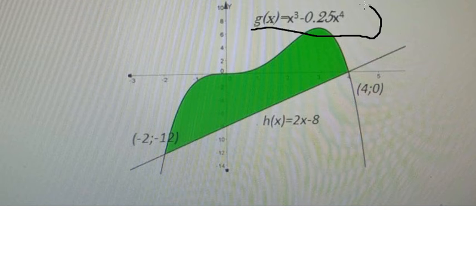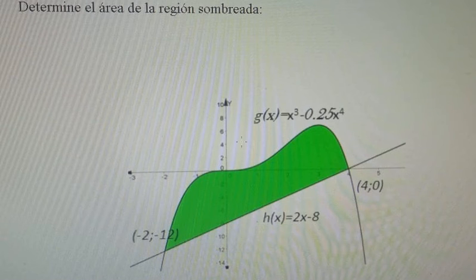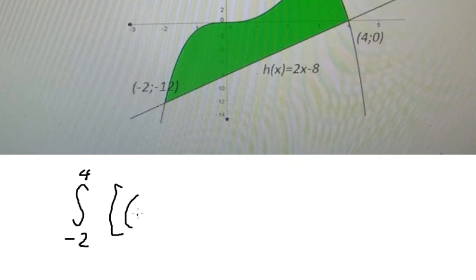We see that the curve is above the line and we have two intersections. So we go about the integral form from negative 2 to positive 4, and we have the curve minus the line.